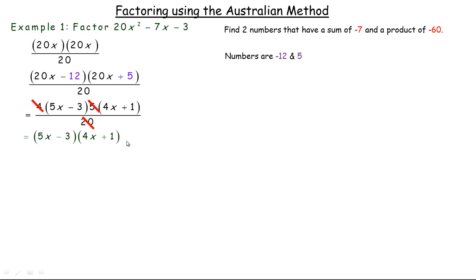Now just to show you how this would normally be written, most people wouldn't write these two steps out separately. So they would probably start by writing just the 20x and 20x over 20 and leave a little space. And so once you've got the negative 12 and the 5, you would put them in there, and then factor the 4 out and the 5 out and divide them out, and you get 5x minus 3 times 4x plus 1.